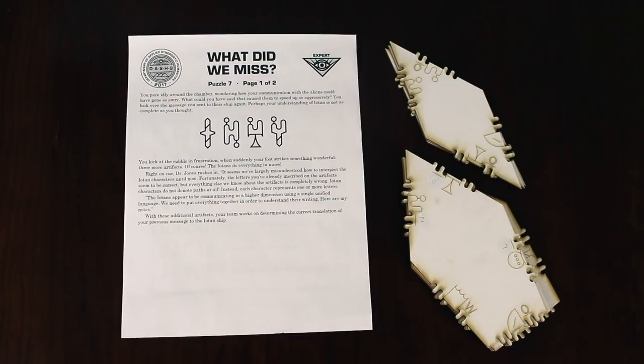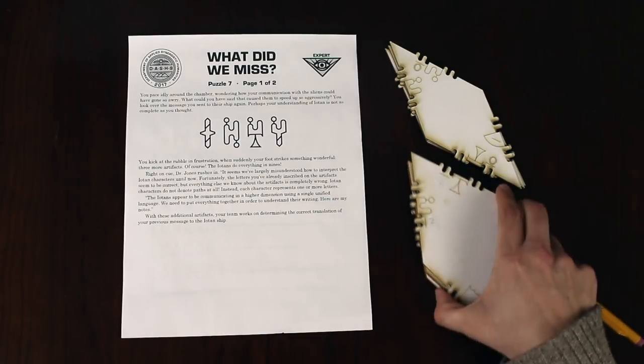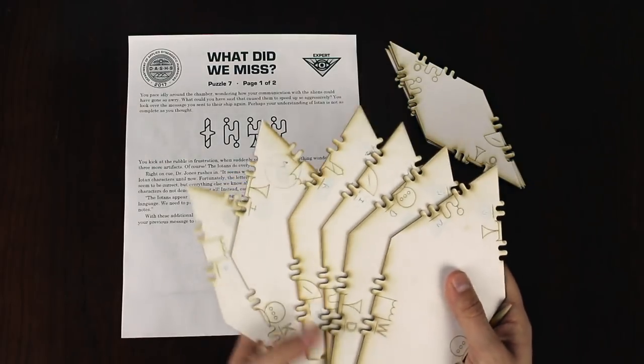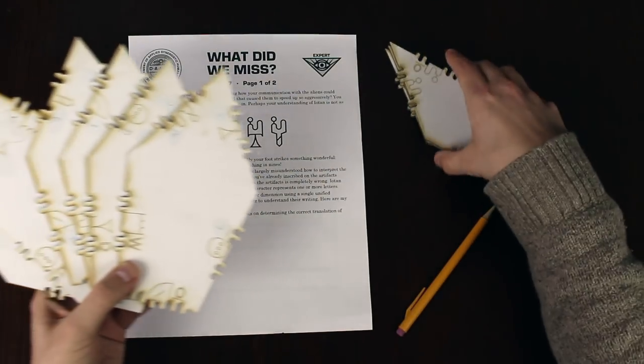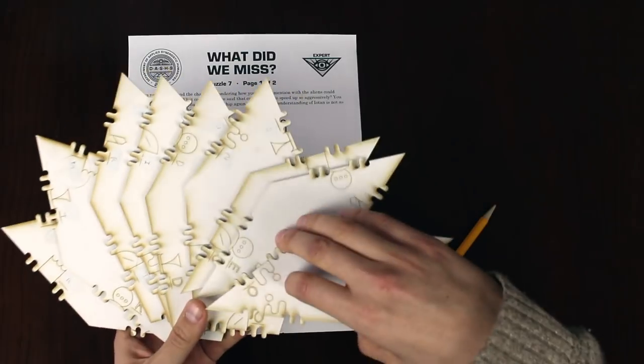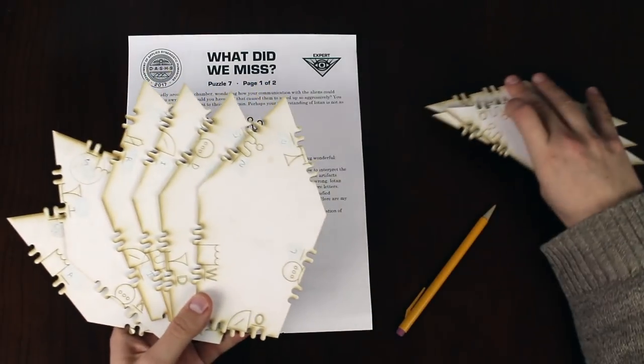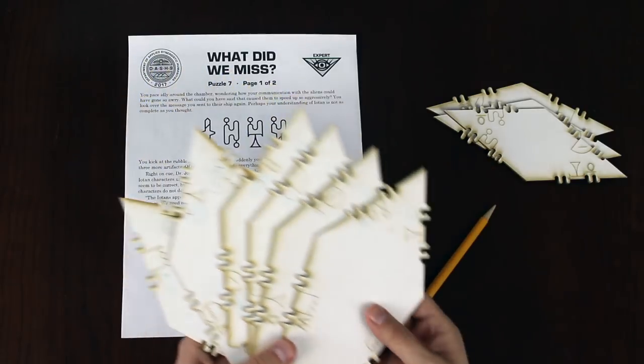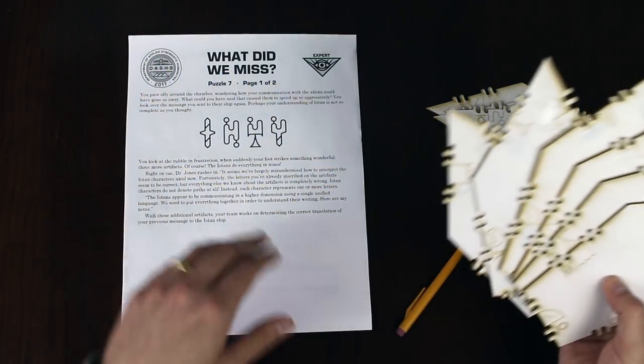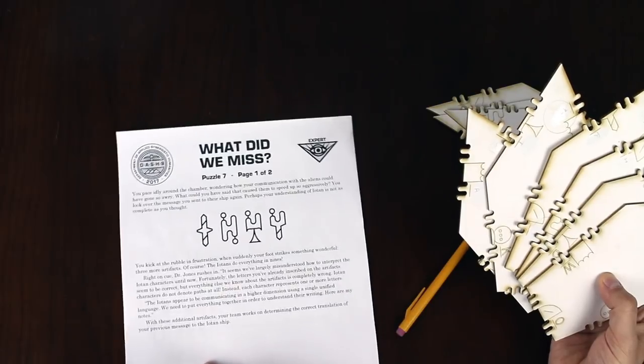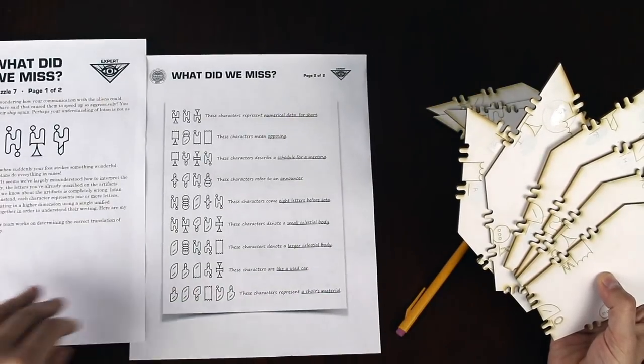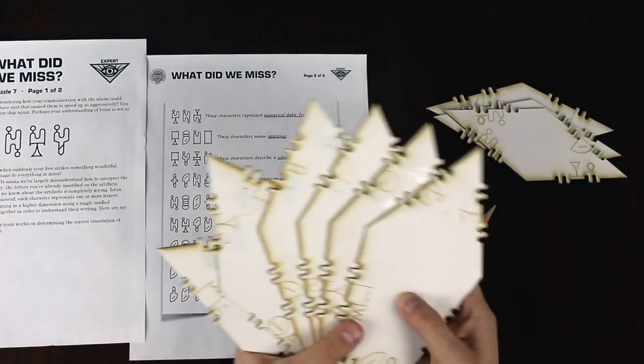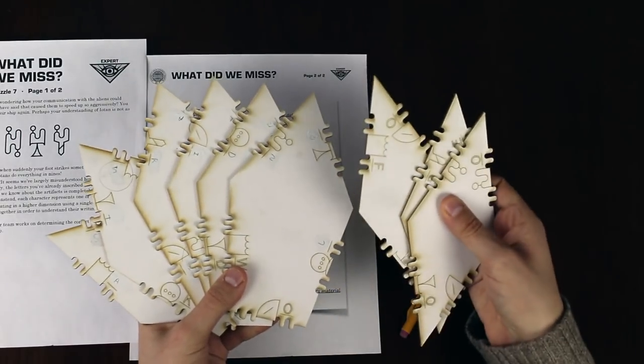This one builds off of that puzzle, so it actually uses these same six pieces that were in that puzzle before. But what it introduces are three new pieces. Now the first puzzle was about decoding these different symbols and eventually spelling out phrases. And this one says, well, we sent this phrase to somebody. This story doesn't matter that much. But it turns out that we were missing these three pieces to begin with.